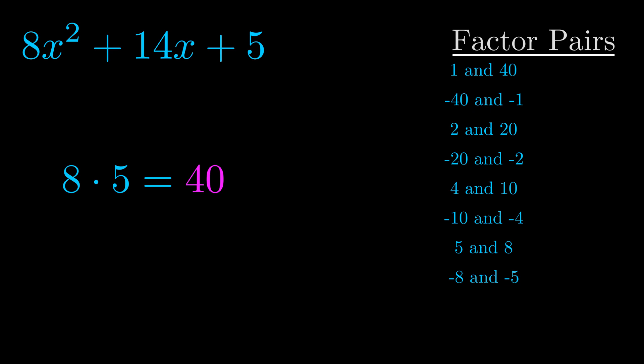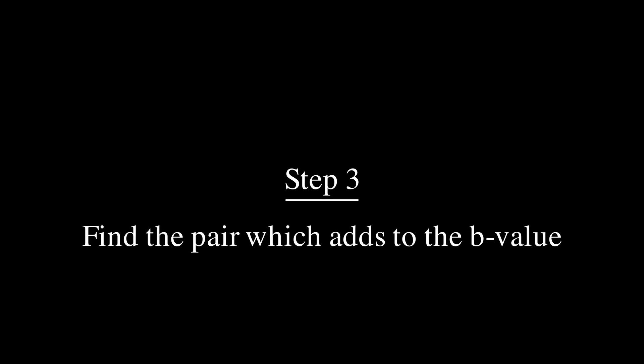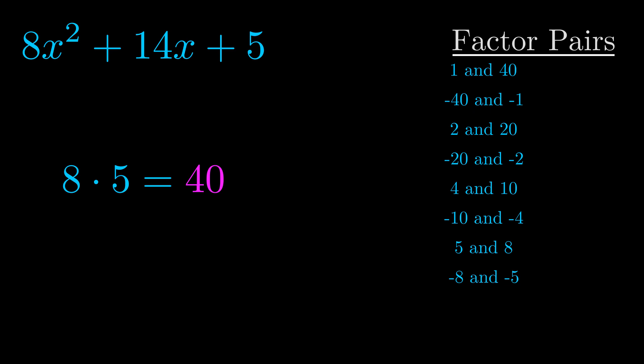Now once you have these factor pairs the goal is to find which of these pairs adds to the b value. The b value is the coefficient on the x term. That's the middle term, the one that we haven't done anything with yet.